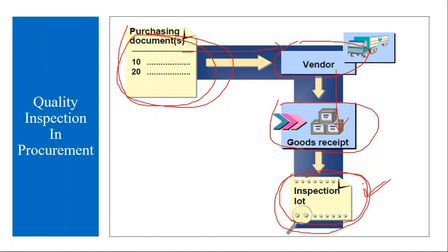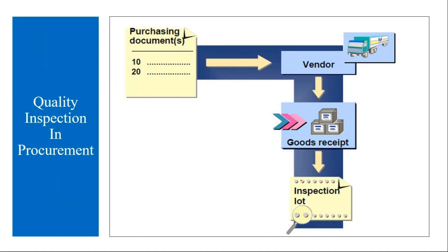This is for quality purposes. In the GR document — the goods receipt document — we will be able to see the QM inspection lot. And at the same time, in the QM inspection lot, we can see our purchase order number, the corresponding purchase order number, the goods receipt material document, and even the supplier number.